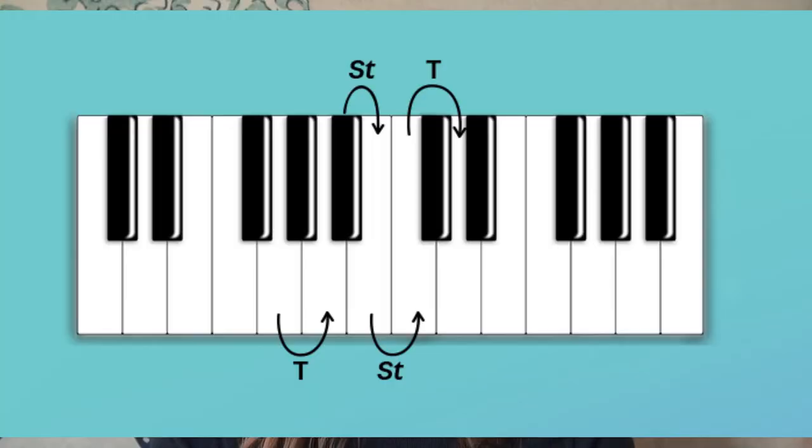I didn't want you to just memorize a bunch of scales and charts — that's no fun. So I want you to conceptually understand what a half step and a whole step are. They're the same thing as a semitone and a whole tone — a semitone is a half step, a whole tone is a whole step. When I start going over these patterns, I'm going to use W's and H's to represent whole step and half step.